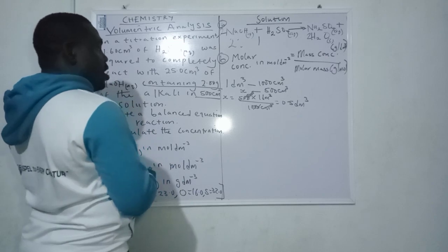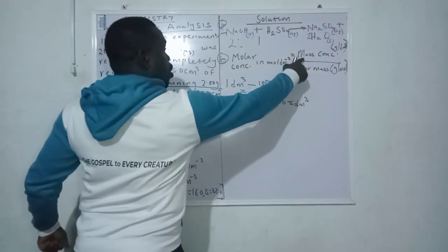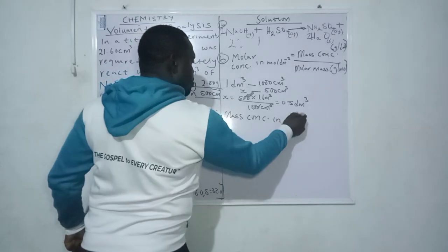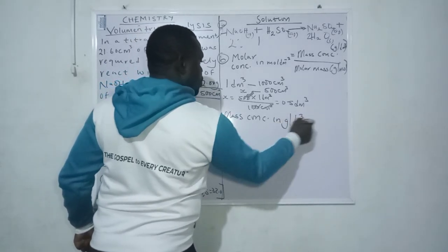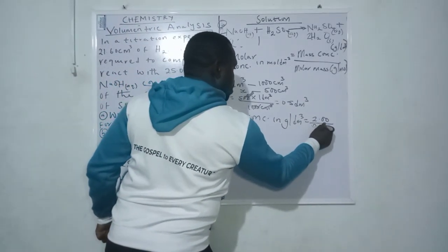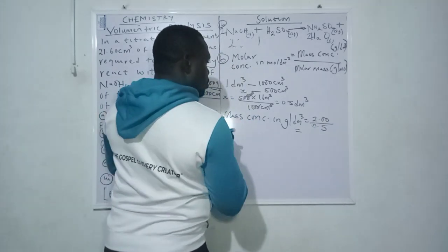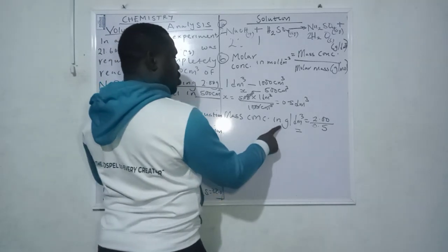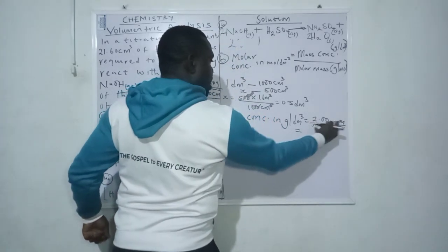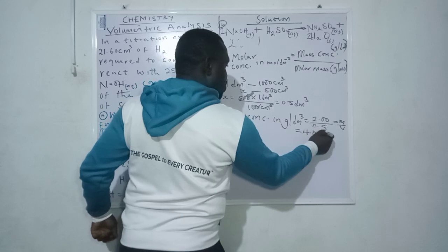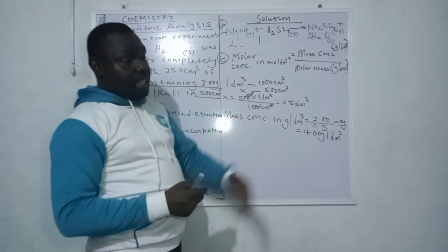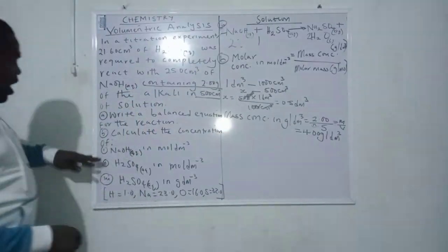Now we find our mass concentration. Mass concentration in gram per dm³ equals mass over volume, which is 2.0 grams divided by 0.5 dm³, giving us 4.0 gram per dm³. We've now obtained our mass concentration.